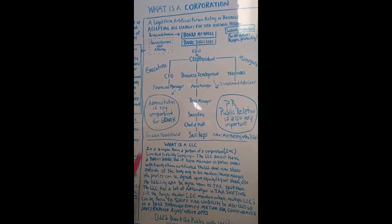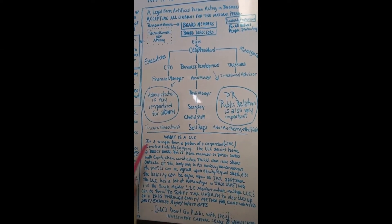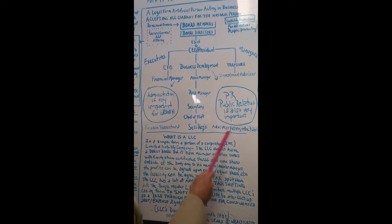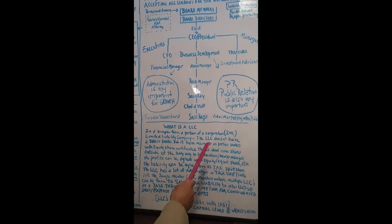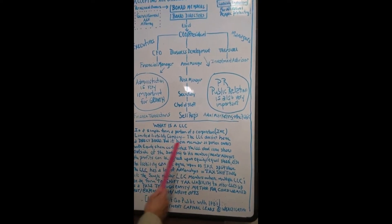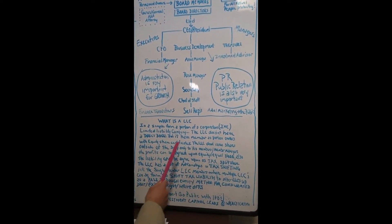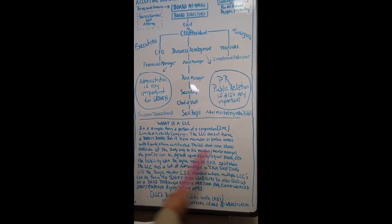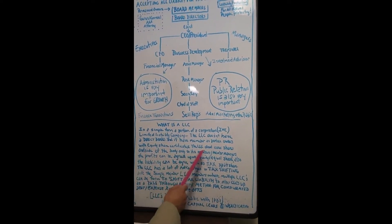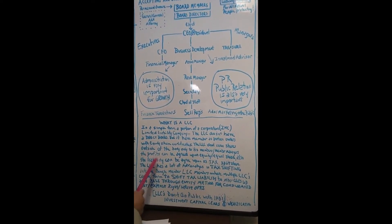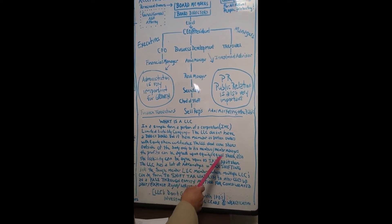Now let's break down what's the LLC in a simple form. A portion of the corporation is limited liability company. The LLC doesn't have a direct vote, but they have members and portion owners with equity share certificates. The LLC don't issue shares outside of the body, only to its members and members managers. The profits can be agreed upon equity equal share.